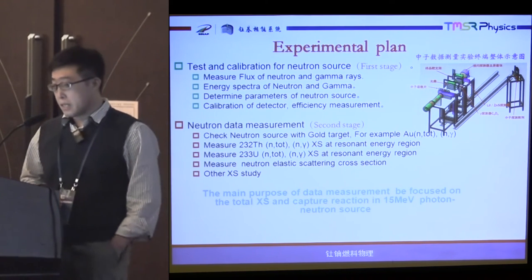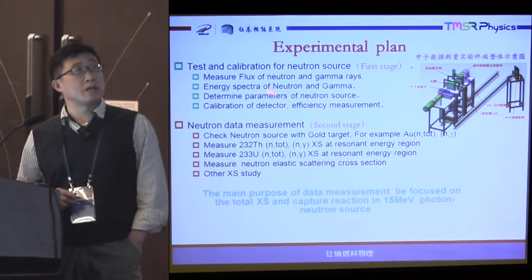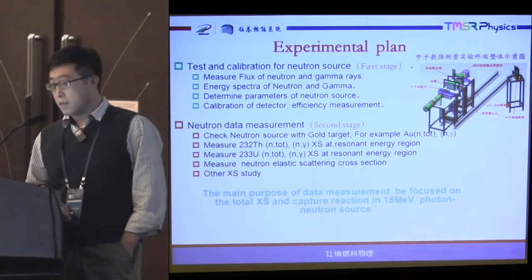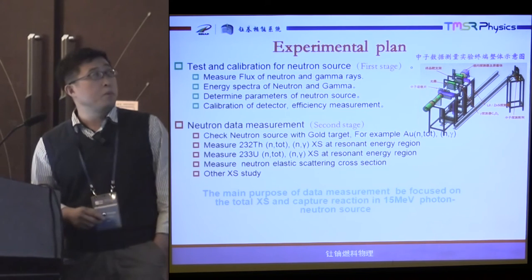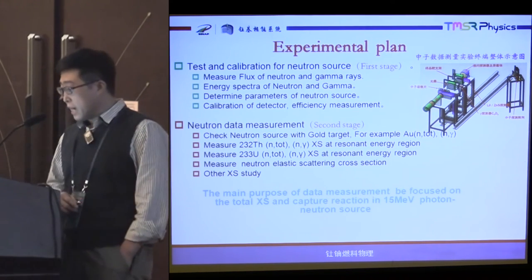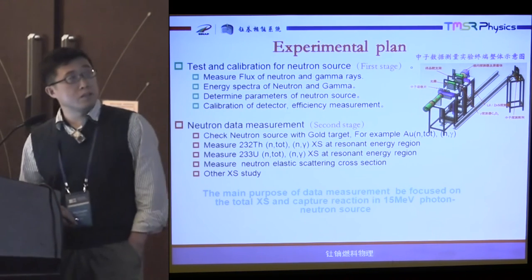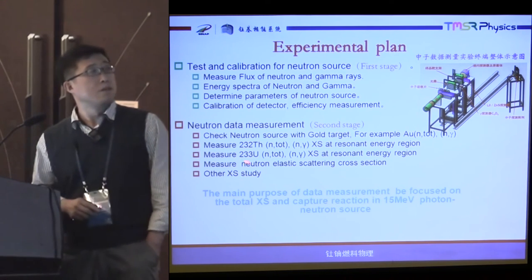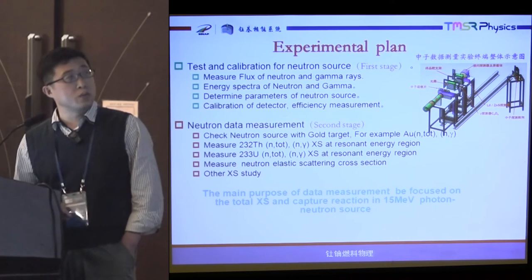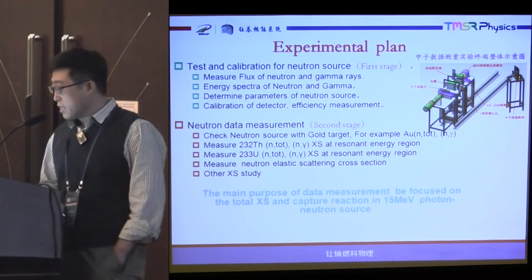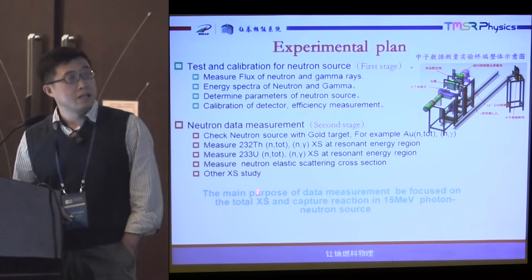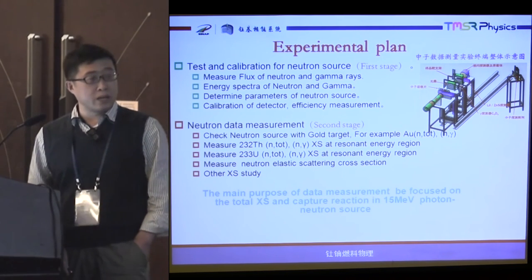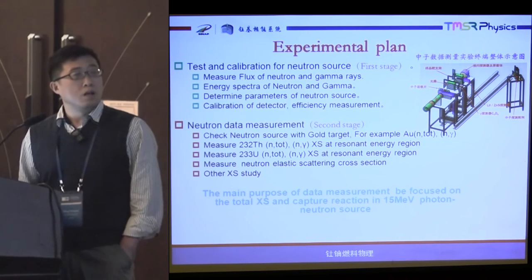First, we will test the calibration for the neutron source, measure the flux of neutron and gamma rays near the target, and measure energy spectra of neutron and gamma. Then we calibrate the detector for efficiency measurement. The second step, we will test neutron data measurement to check our neutron source with a gold target, and measure the thorium-232 total and gamma cross-section at the resonance energy region. Then we will measure the uranium-233 total and gamma cross-section at resonance energy region. Finally, we will start some neutron elastic scattering and other cross-section studies. The main purpose of this measurement is to focus on the total cross-section and capture reaction in a 15 MeV photoneutron source.